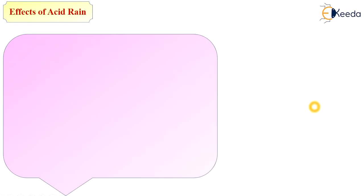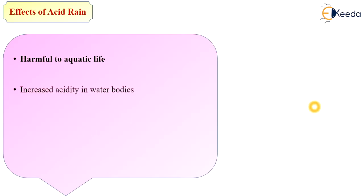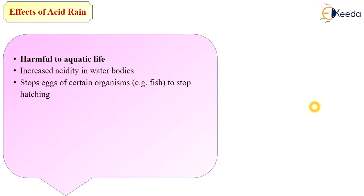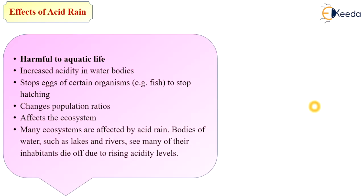The effects of acid rain include harmful impacts on aquatic life, human health, and structures. Acid rain increases the acidity in water bodies, stops the eggs of certain organisms such as fish from hatching, and changes the population ratios of aquatic life, affecting the ecosystem. Bodies of water such as lakes and rivers see many of their inhabitants die due to rising acidity levels.